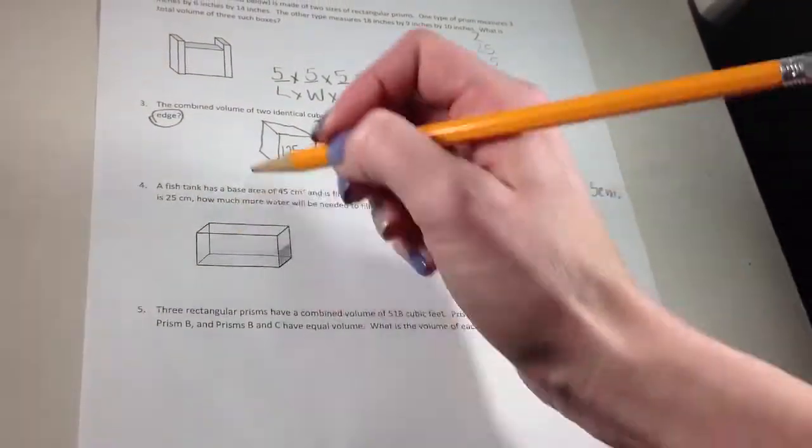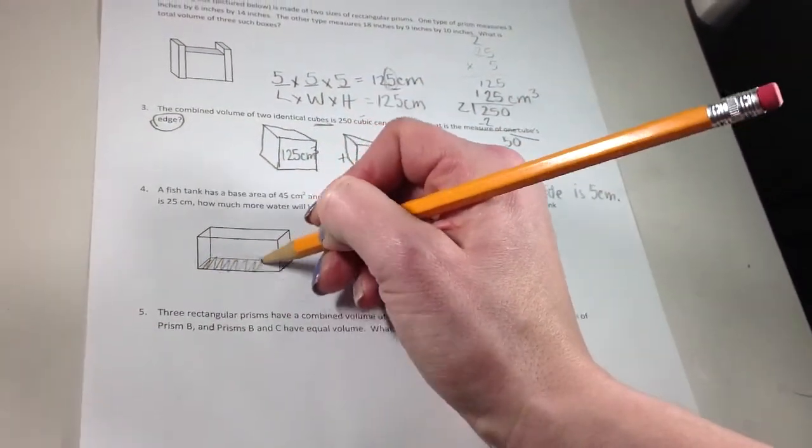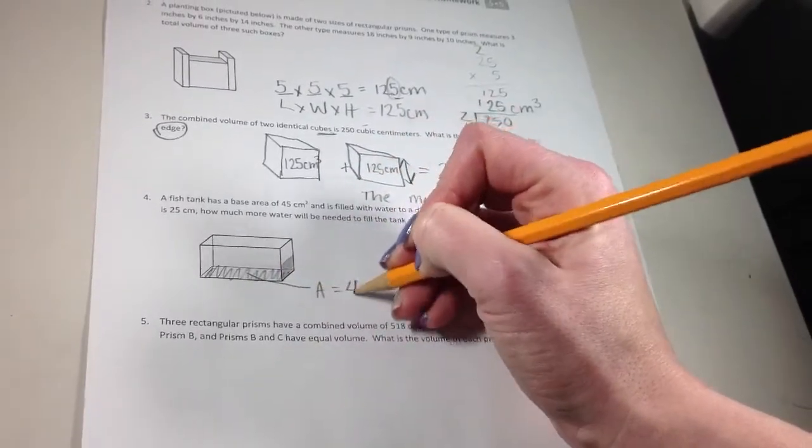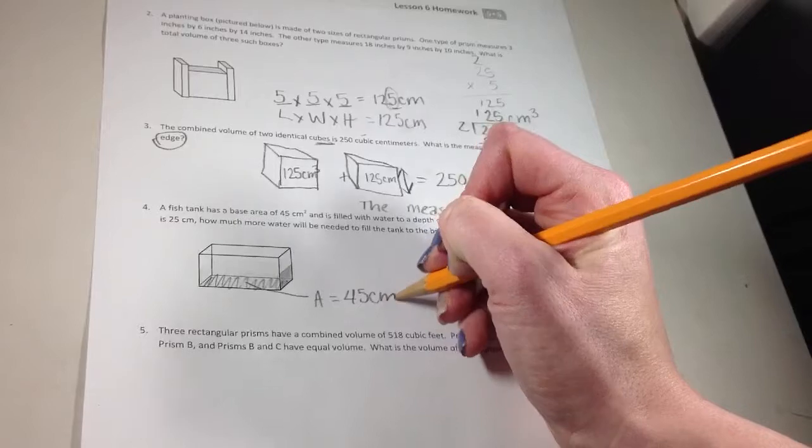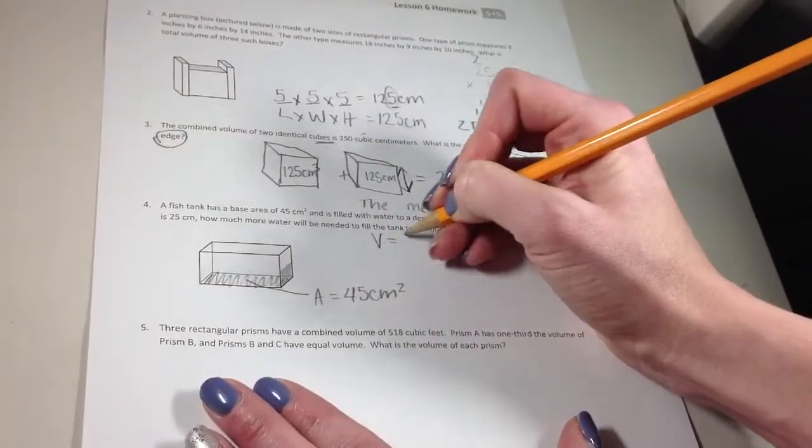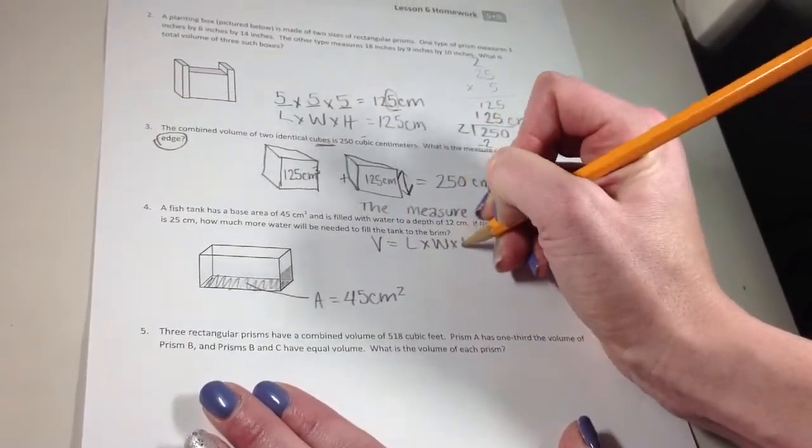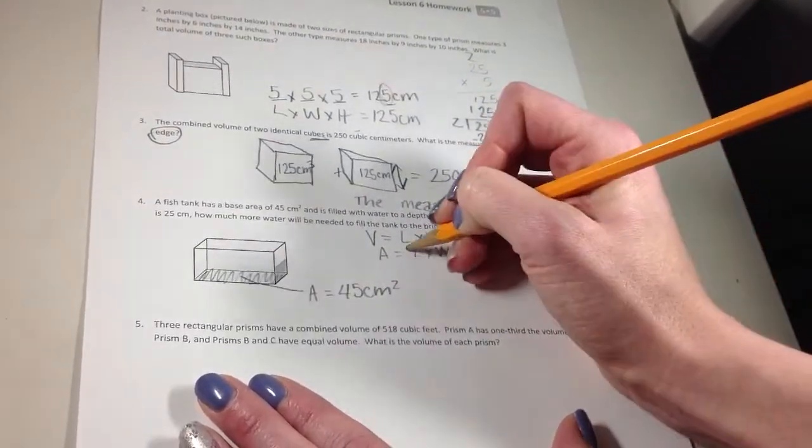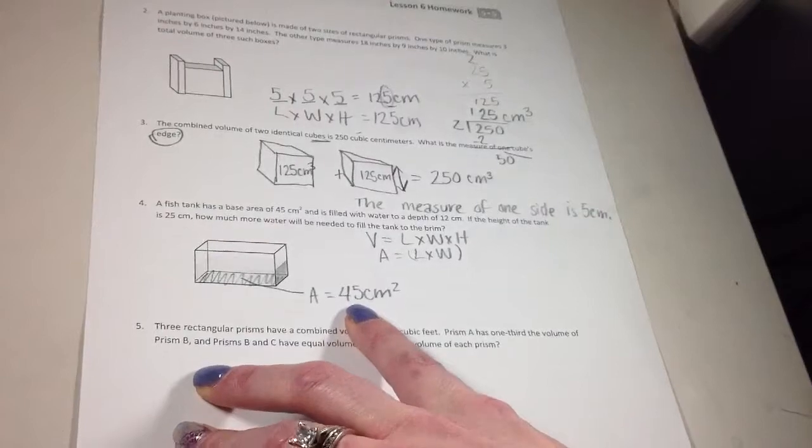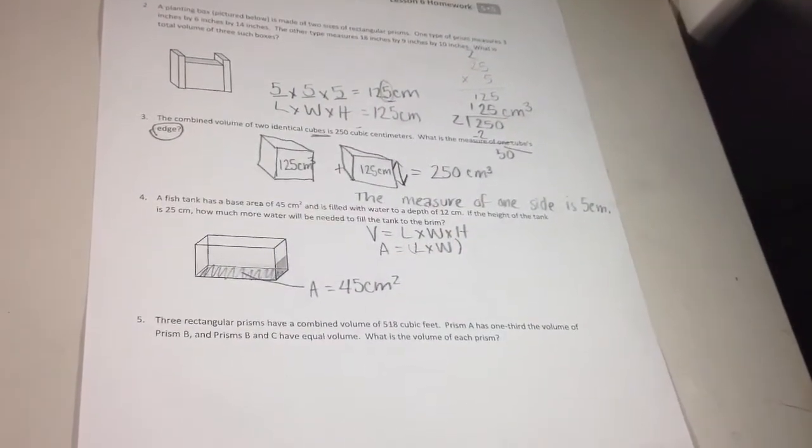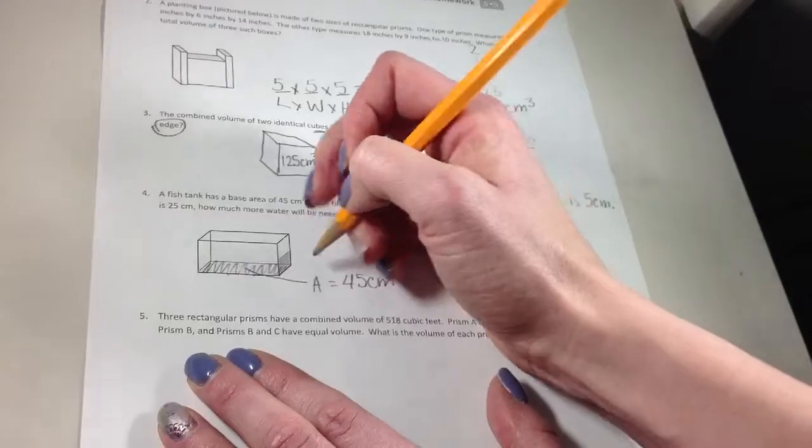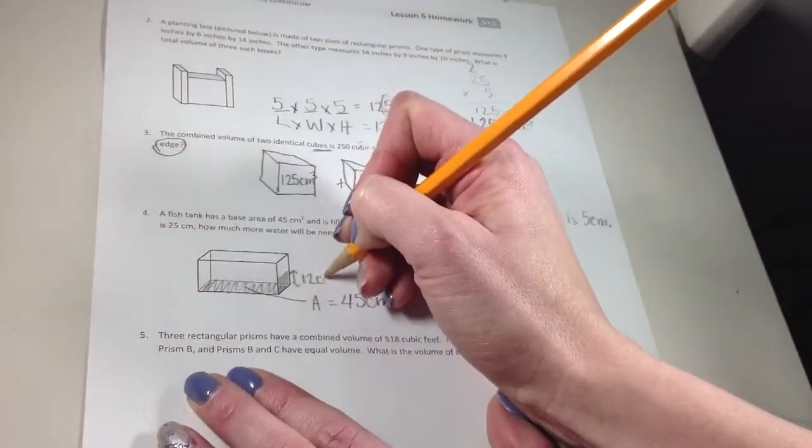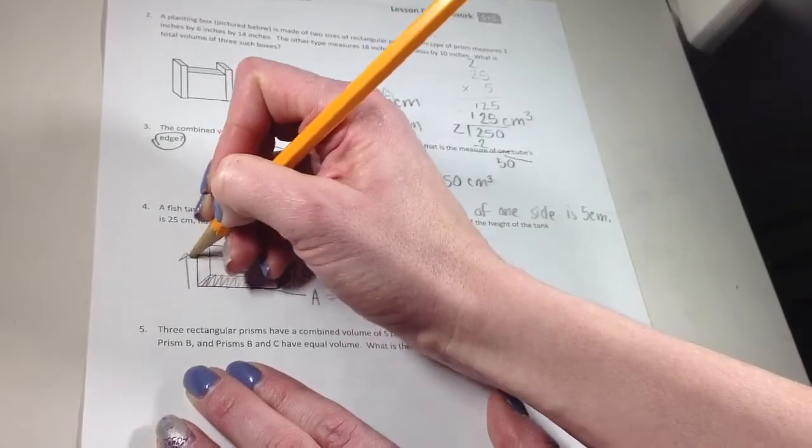So it says the base area. So the area in the bottom of this fish tank, the area, is 45 centimeters squared. If I look at volume, volume is length times width times height. And area is length times width. So I know when they give me the area, I just have that first step done for me of the volume. Now it says it's filled with water to 12 centimeters. And I know the tank is actually 25 centimeters tall.